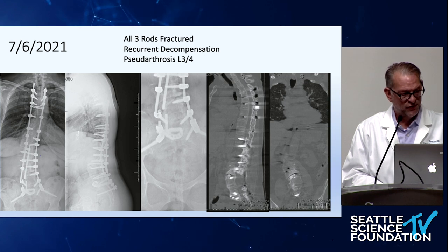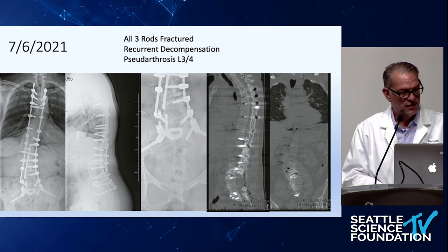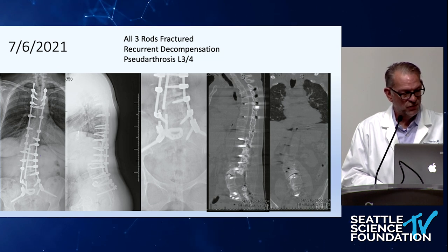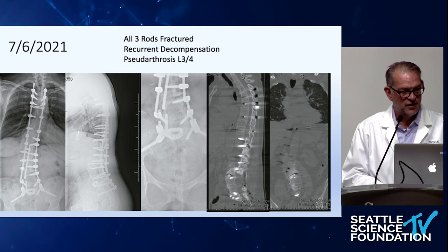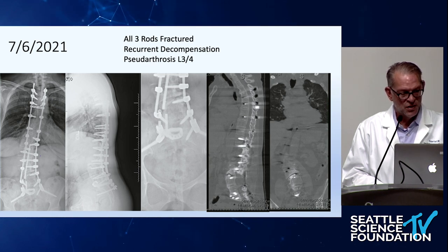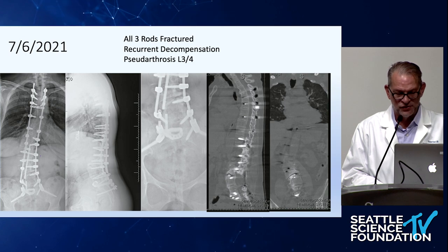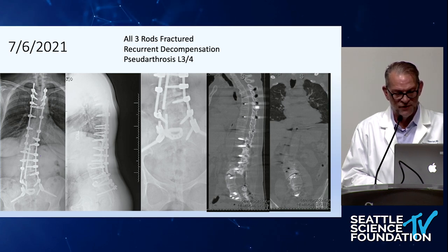You can see that she's now lost her coronal plane correction and is decompensated again to her left and somewhat anteriorly, and is retroverting her pelvis a bit. On the right, the pseudoarthrosis is clearly present at the L3-4 disc space; the L4-5 and L5-S1 discs do seem to have healed solidly, as well as the posterior column of every other level.